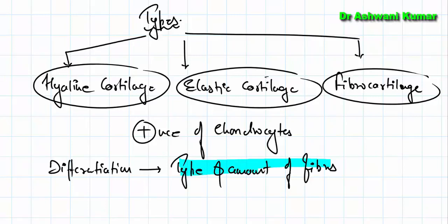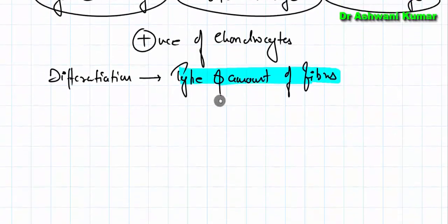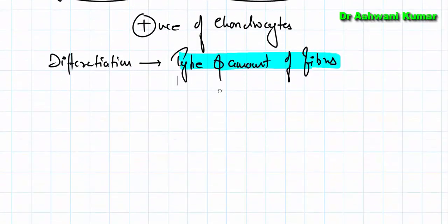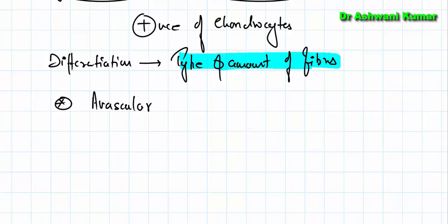The type and amount of fiber present inside will decide what type of cartilage it is — whether hyaline, elastic, or fibrocartilage. We should also know that cartilages are avascular, devoid of blood vessels. Their nutrition comes from the perichondrium, which is richly supplied by blood vessels.